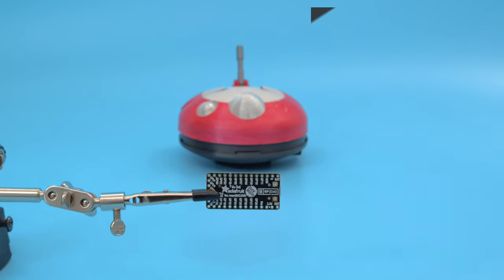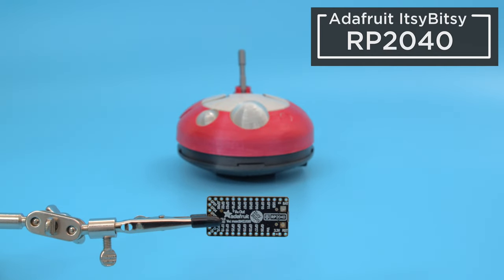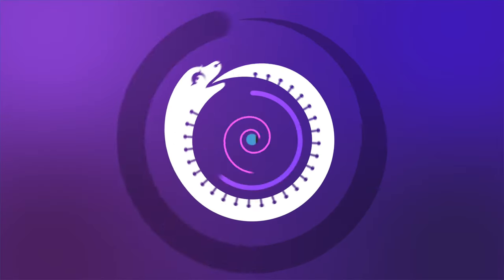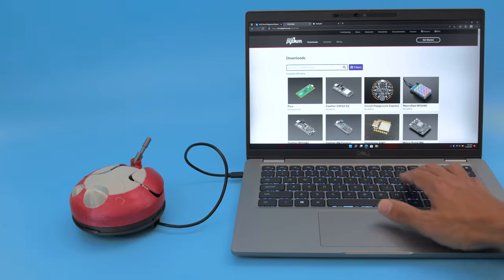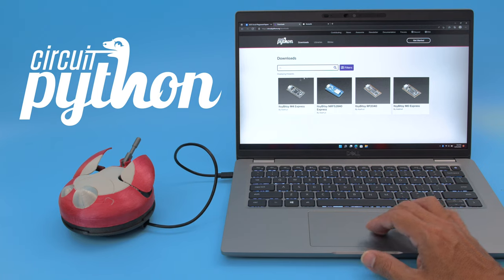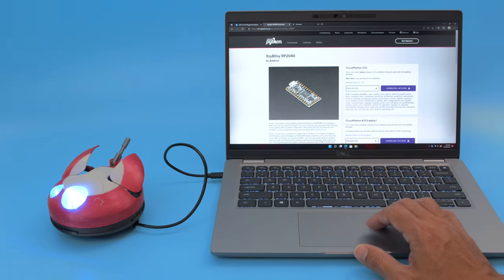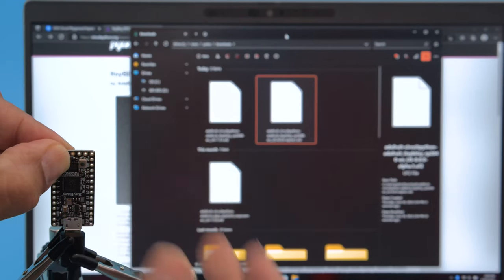It's powered by the Adafruit itsy bitsy rp2040 running CircuitPython. Head over to CircuitPython.org and download the latest firmware for your dev board. You can download the UF2 and drag and drop to automatically install the firmware.